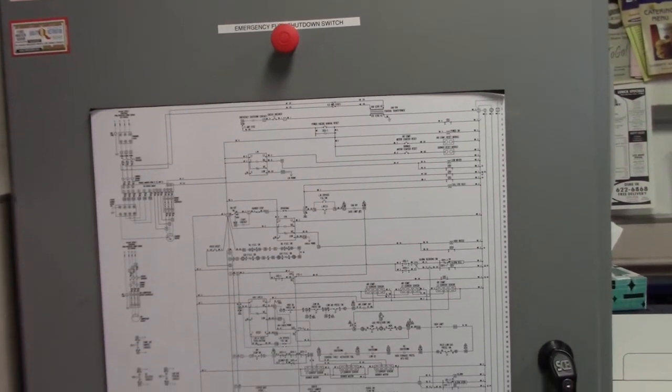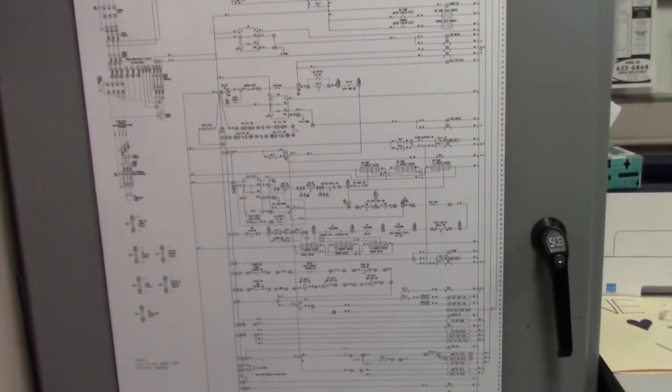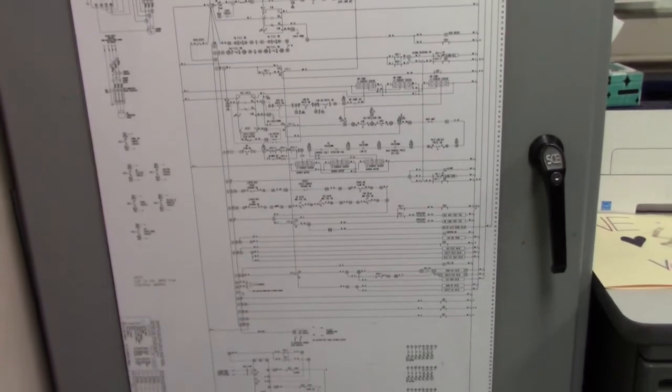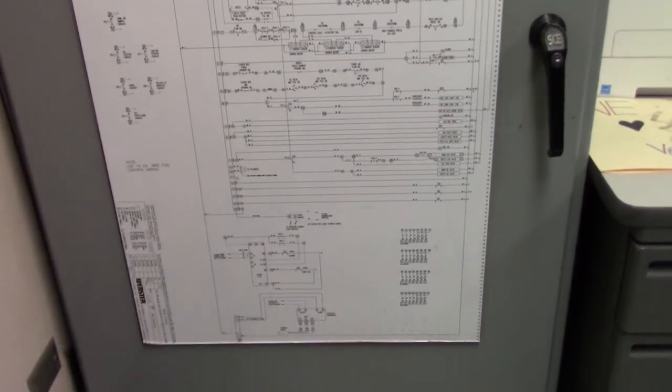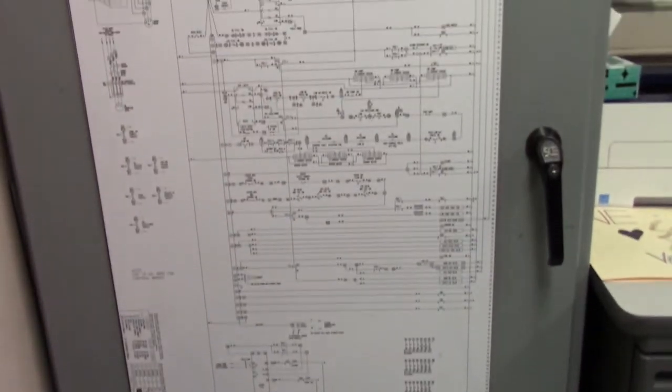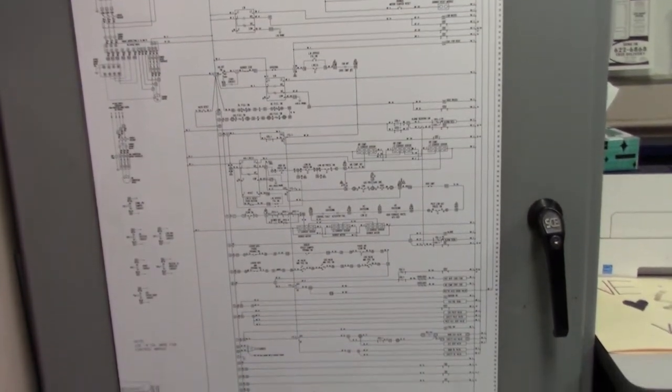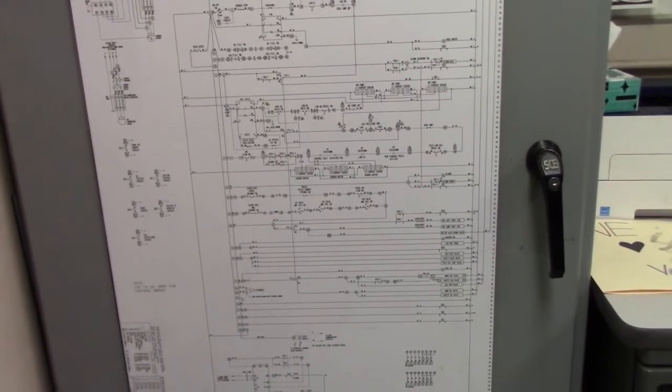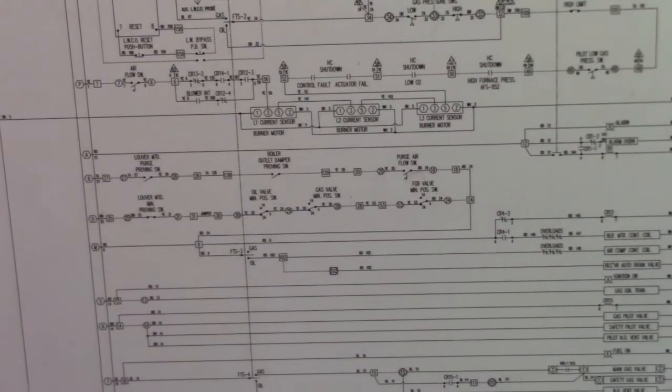So in the control room, we have a schematic of the boiler control system. If we use that indication on the FireEye, M8 limit open, we could use this schematic to narrow down the possible components that are causing the problem. So we need to trace out on this diagram the M8 loop.